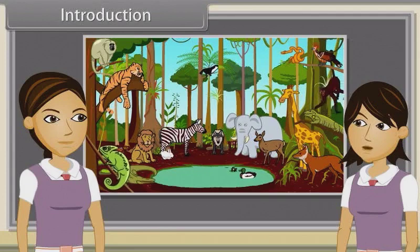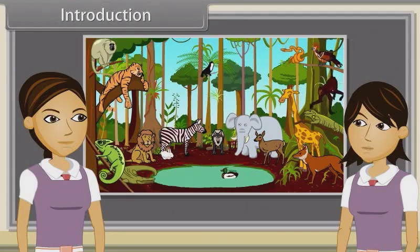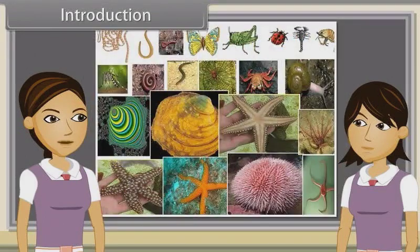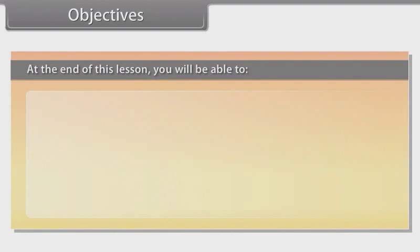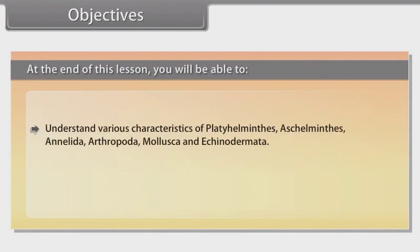Now we are going to discuss characteristics of Platyhelminthes, Aschelminthes, Annelida, Arthropoda, Mollusca and Echinodermata. At the end of this lesson, you will be able to understand various characteristics of Platyhelminthes, Aschelminthes, Annelida, Arthropoda, Mollusca and Echinodermata.